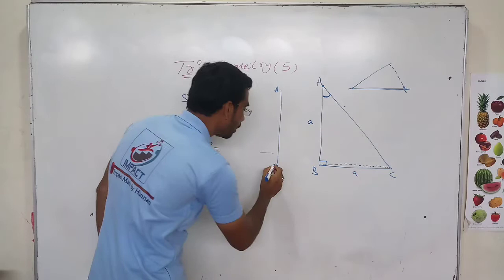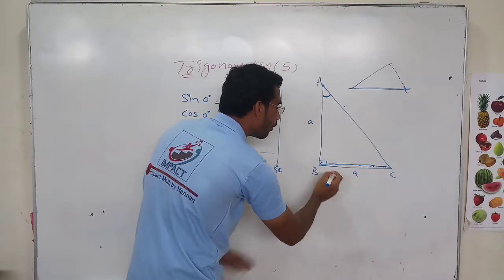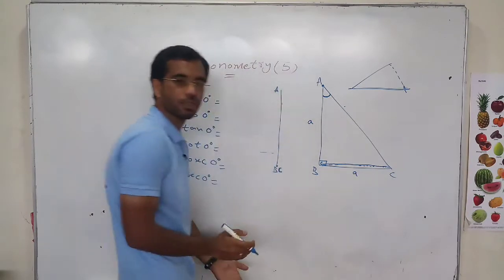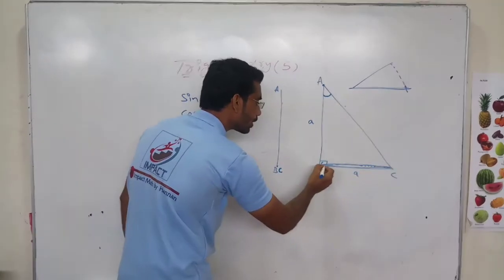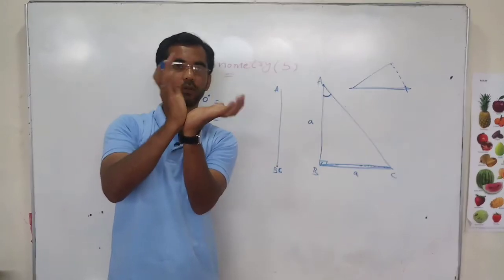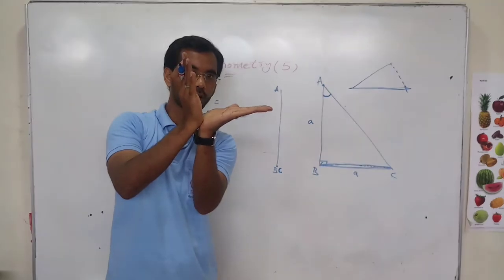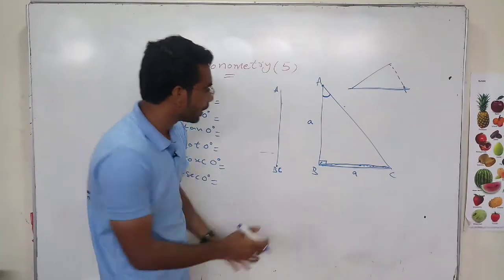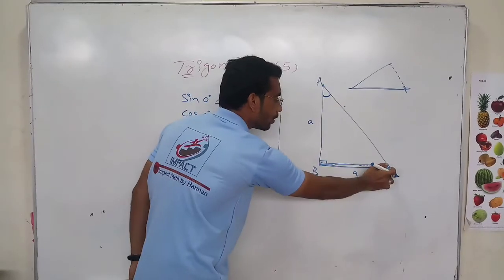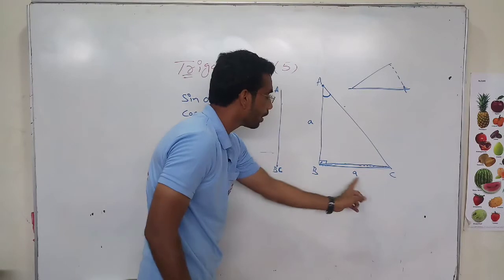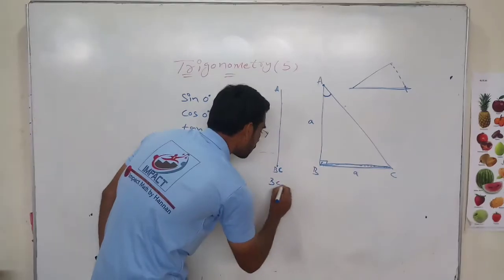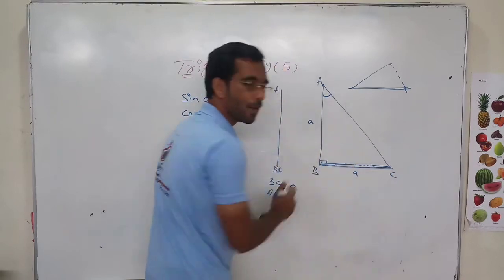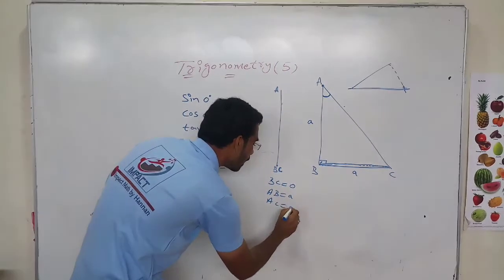When the angle becomes 0, the opposite side BC is getting close to 0, so BC equals 0. AB equals A, and since they overlap on each other, AC also becomes A.